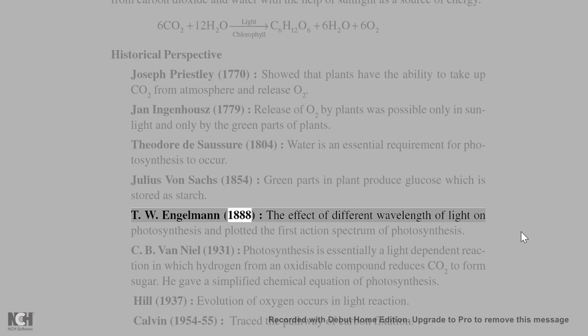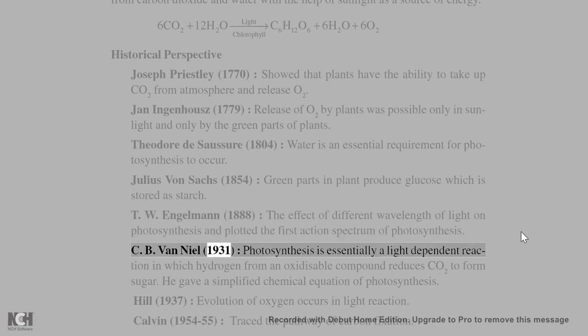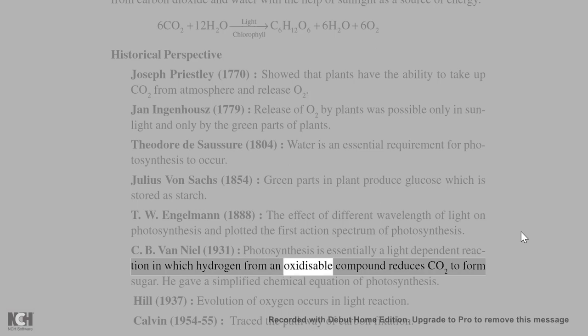C.B. Van Neel (1931): photosynthesis is essentially a light-dependent reaction in which hydrogen from an oxidizable compound reduces CO₂ to form sugar. He gave a simplified chemical equation of photosynthesis.